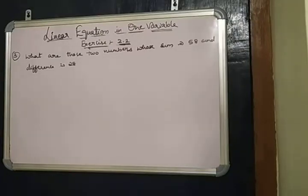Hi everyone, in today's session we are going to discuss linear equations in one variable, Exercise 2.2. The question is the third question: What are those two numbers whose sum is 58 and the difference is 28?